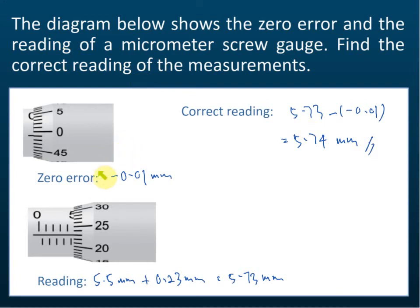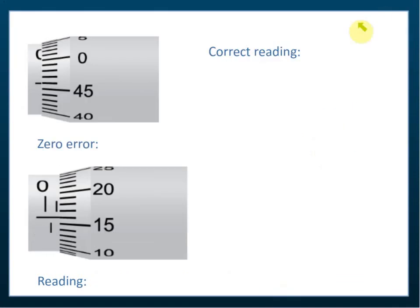First we identify the zero error. Close the micrometer and then identify the zero error. Then take your reading, and then the reading minus the zero error, that is the correct reading. This one I want you to straight away tell me the correct reading.